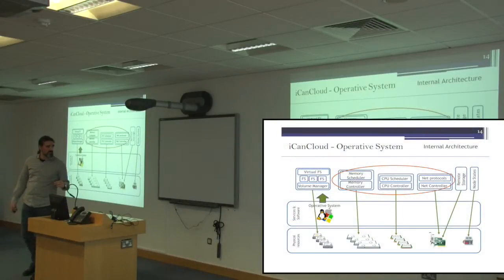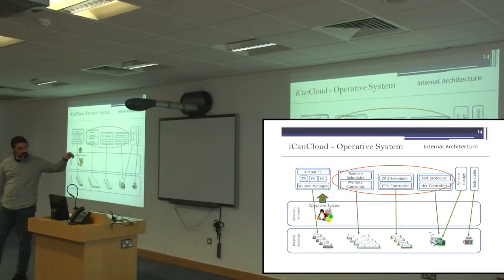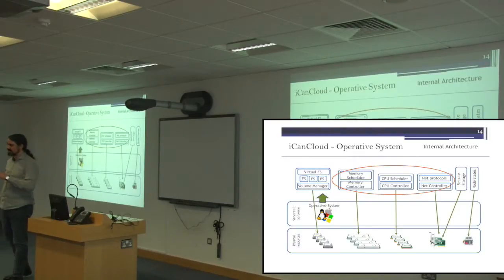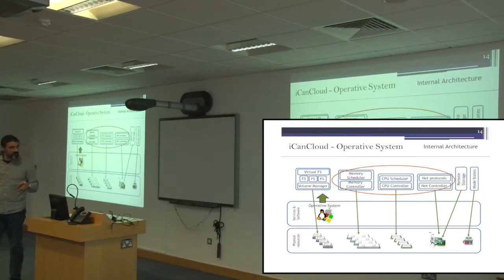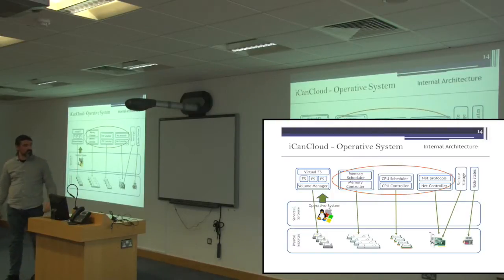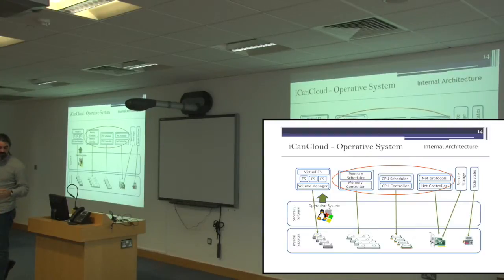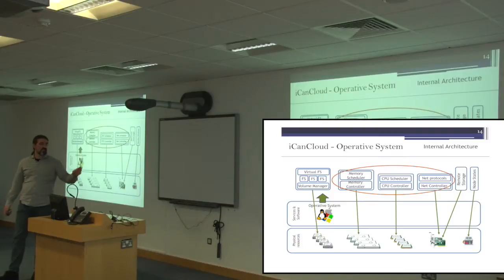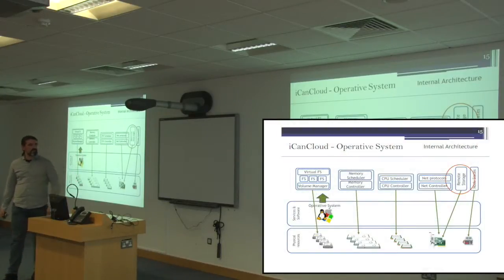For the CPU component, there are two parts: a controller responsible for changing CPU states depending on load, and a scheduler that models policies such as round-robin. It's also possible to study different CPU governing policies. The memory scheduler handles random writes or sequential writes, and the remote storage component routes requests through the network to reach the concrete node that holds the information.